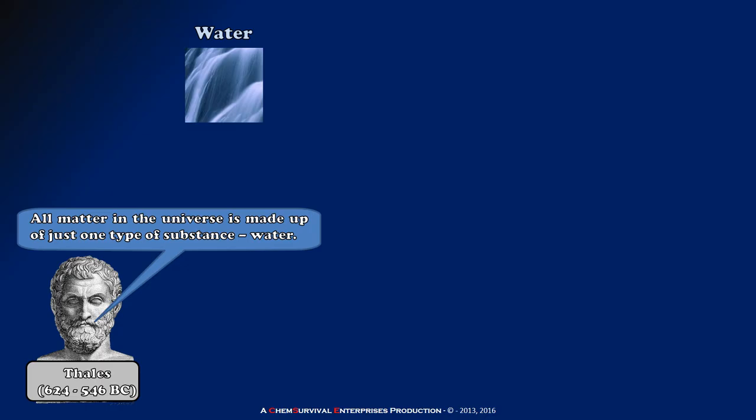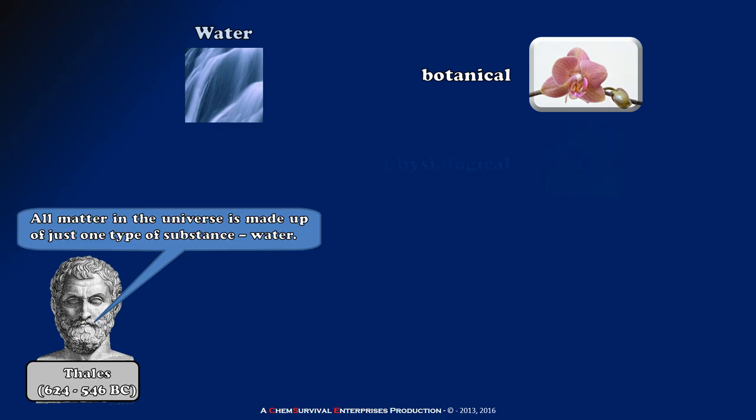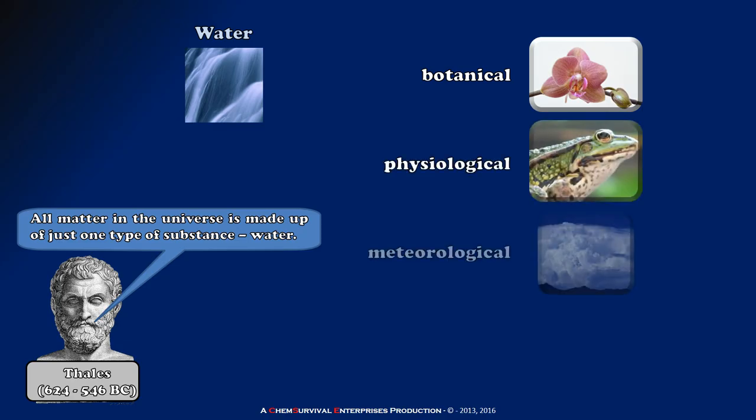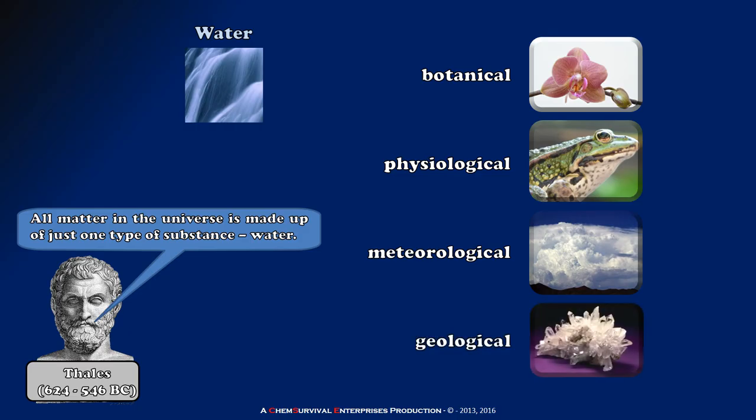Now, Thales attempted to explain this by suggesting that water could take on varying states, such as botanical, physiological, meteorological, and geological water. These states, he claimed, in combination with one another, were a way of reconciling this question of how we have such a diverse set of materials in the universe around us.